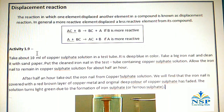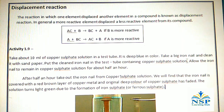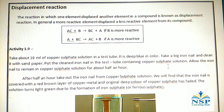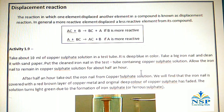Activity 1.9: Take about 10 ml of copper sulfate solution in a test tube — it is deep blue in color. Take a big iron nail and clean it with sandpaper. Put the clean iron nail in the test tube containing copper sulfate solution and allow it to remain there for about half an hour.